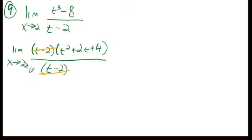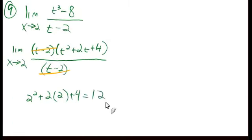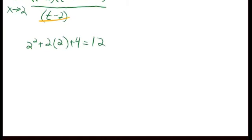Now we have this new function whose limit is the same as the limit of the original function before we cancelled anything out. So we get to just put 2 in here: 2 squared plus 2 times 2 plus 4. That's 4 plus 4 plus 4, which is 12. So the limit is 12.